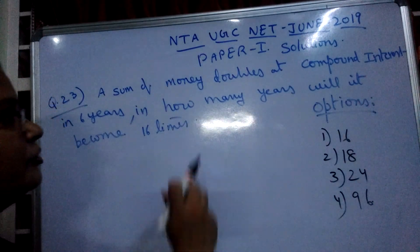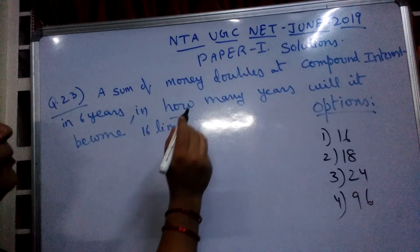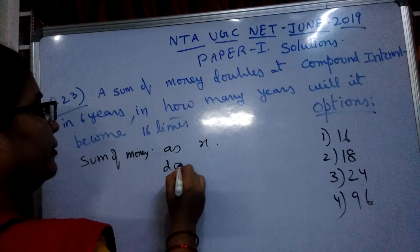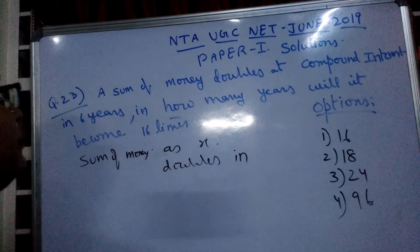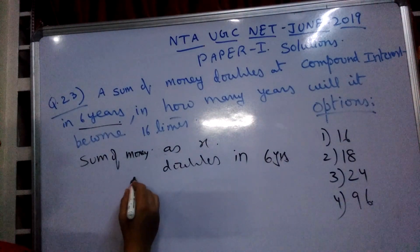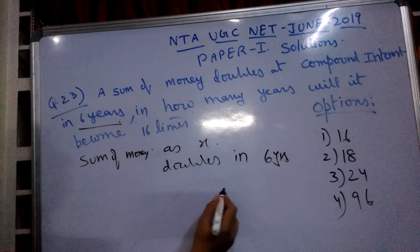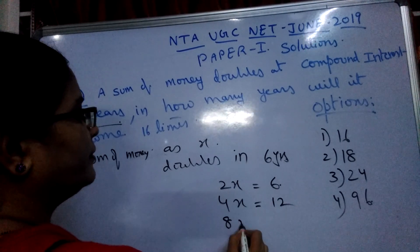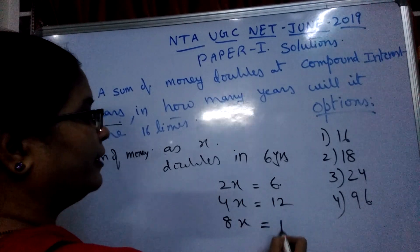First of all, let us consider the sum of money as X. It doubles in compound interest in how many years? Compound interest doubles in 6 years. So it doubles in 6 years. The sum of money X doubles in 6 years to become 2X. Again, it becomes 4X in 12 years. Again, it becomes 8X — 4 doubles to 8 in 18 years. And again, it doubles to 16X in 24 years.